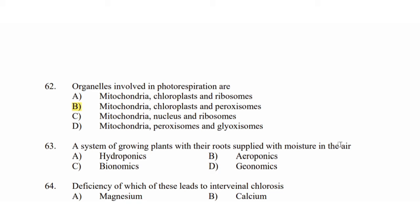Air is related — hydro is the first option, but that is not correct because water is hydroponics. There is no atmospheric moisture in the root for hydroponics. The system of growing plants in this way — the answer is Option B: aeroponics.